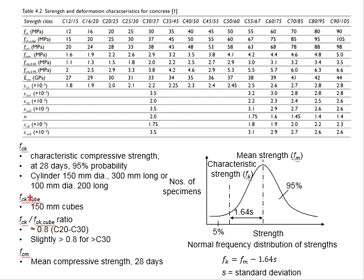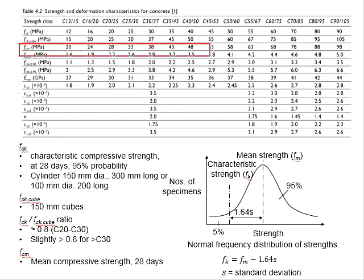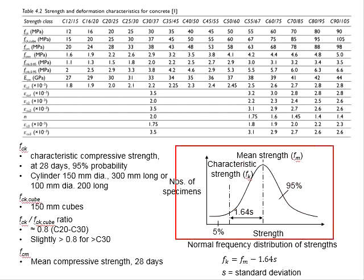FCK cube is obtained by using a concrete cube of 150 mm. For concrete grades less than 30, the ratio between the cylinder and concrete cube strength is about 0.8. When the grade is more than 30, the ratio will be larger than 0.8. In the table, there is a row known as FCM, which is the mean compressive strength at day 28 of concrete.